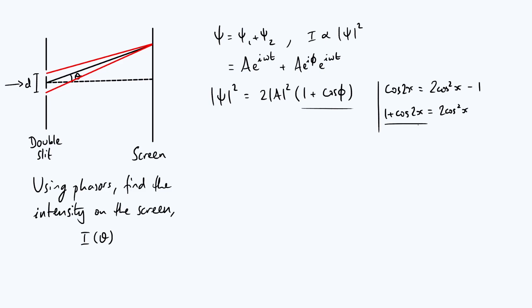In this identity we've got 1 plus cos of 2x, and so you could think, well, 2x is like phi. If 2x is phi, then x would be phi over 2, and therefore this whole bracketed term, 1 plus cos phi, is the same as 2 cos squared of phi over 2. So the 2 in the 2 cos squared phi over 2 combines with this 2 here and makes a 4, and you get 4 mod a squared times cos squared of phi over 2.